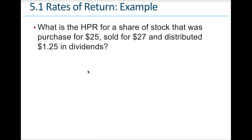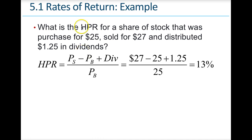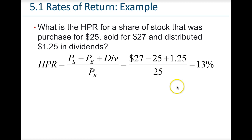Here's an example with some input values. The way I look at it is: new price minus old price plus income, divided by old price. This would be a 13% return — not a bad return.